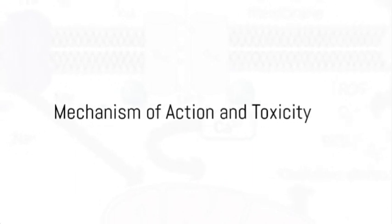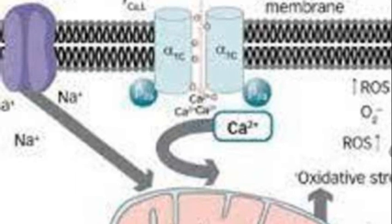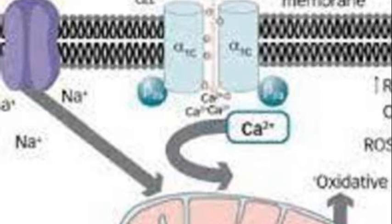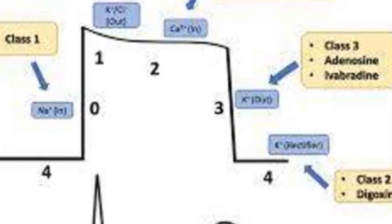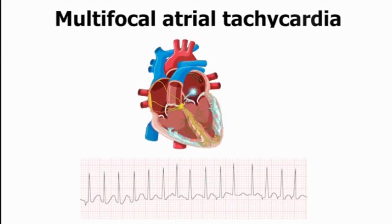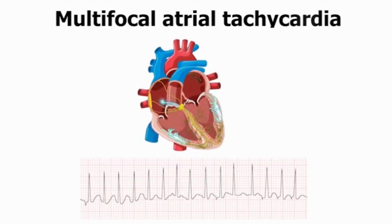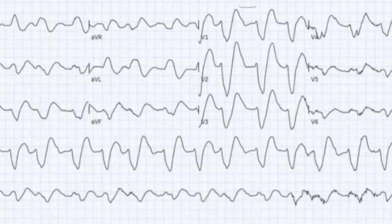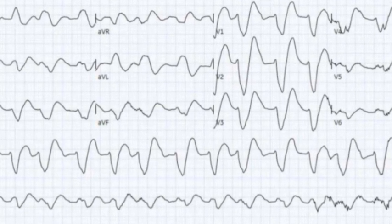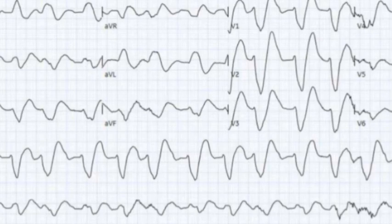Mechanism of action: Flecainide is a class 1C antiarrhythmic that binds to the voltage-gated sodium channels of the myocardium, slowing depolarization and prolonging phase 0 of the action potential. This effect decreases the conduction velocity of cardiac impulses, which can be beneficial in treating arrhythmias such as atrial fibrillation. However, in toxicity, Flecainide can cause brady dysrhythmias, atrioventricular nodal blockade, ventricular tachycardia, and rate-dependent QRS widening due to its potent sodium channel blocking properties.